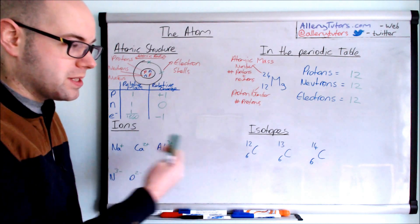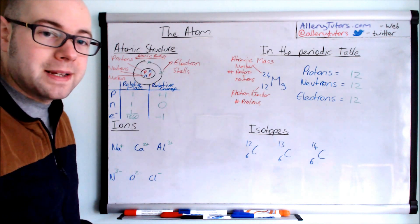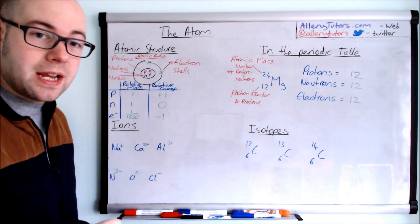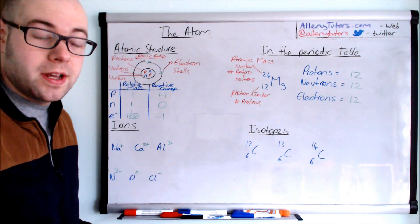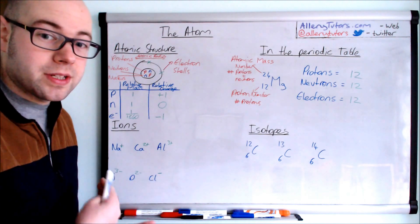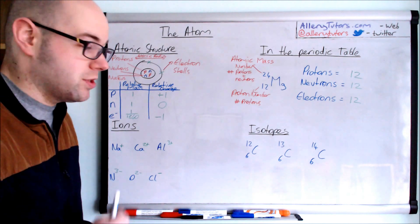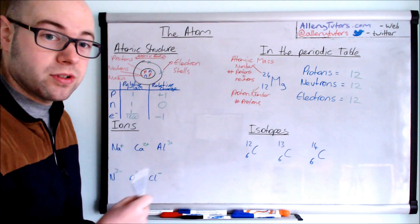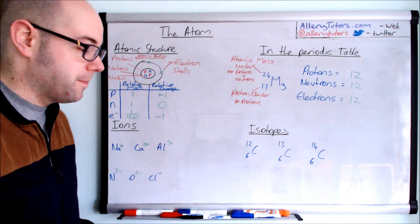And then just going on to the last one is isotopes. So isotopes are basically the element with the same number of protons, but a different number of neutrons. And an example here I'm going to use is carbon. And what I'd like to do is to go through each one of them and just show you how many protons and neutrons we have in these as well.